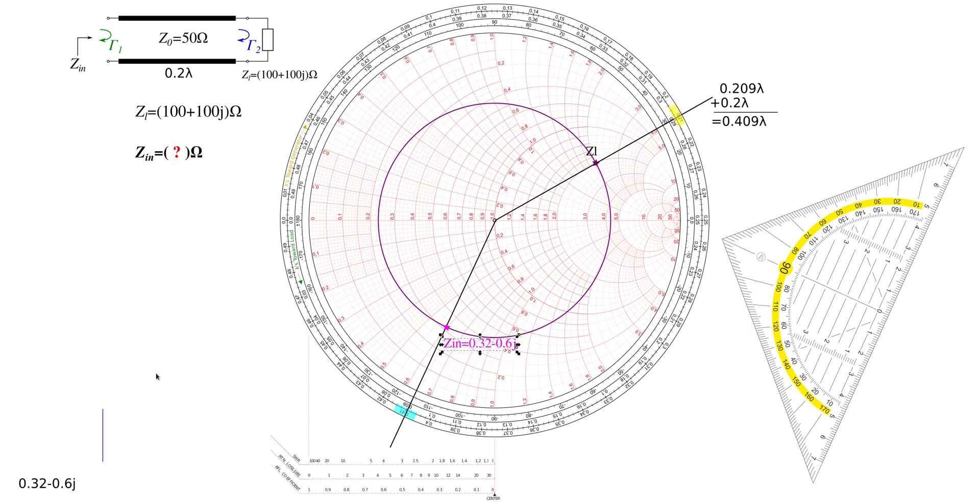This is my Z_in value now, my normalized Z_in value. So to be precise, I should put a little prime in here. So my normalized Z_in value is 0.32 minus 0.6j. And this we can denormalize now. We can plug it in here into our final solution, which is this times 50 is 16 minus 30j ohms. That's my input impedance of that transmission line.